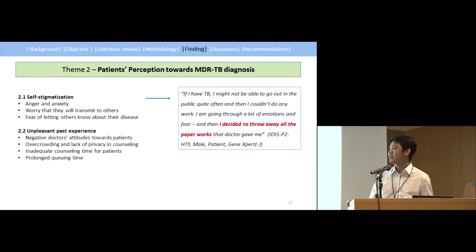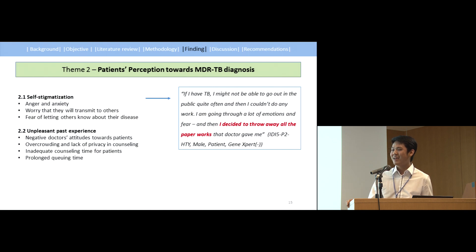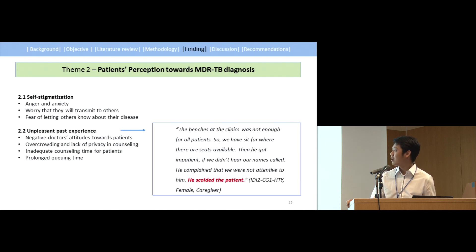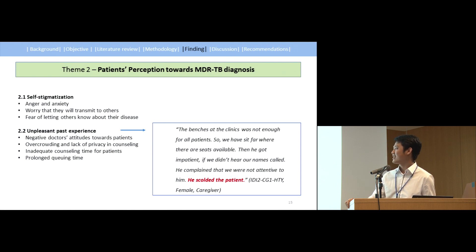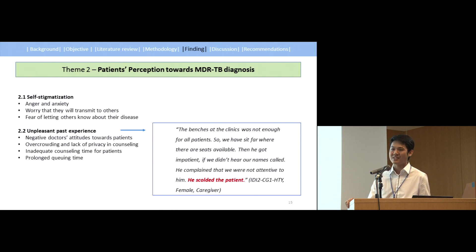Another major setback is the unpleasant past experiences in public hospital sectors — negative attitudes from doctors towards patients, overcrowding, lack of privacy in counseling, and prolonged queuing times, all affecting patients' uptake of GeneXpert services. A patient mentioned the benches at the clinic were not enough for all patients, and a doctor scolded patients if they didn't hear their names called.